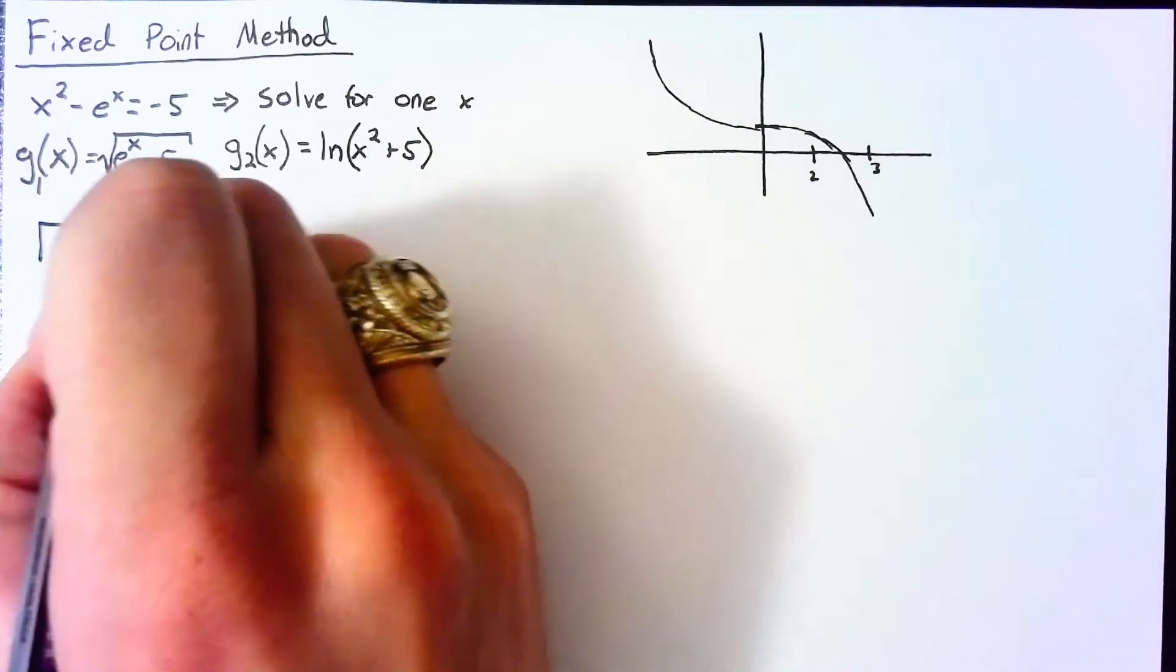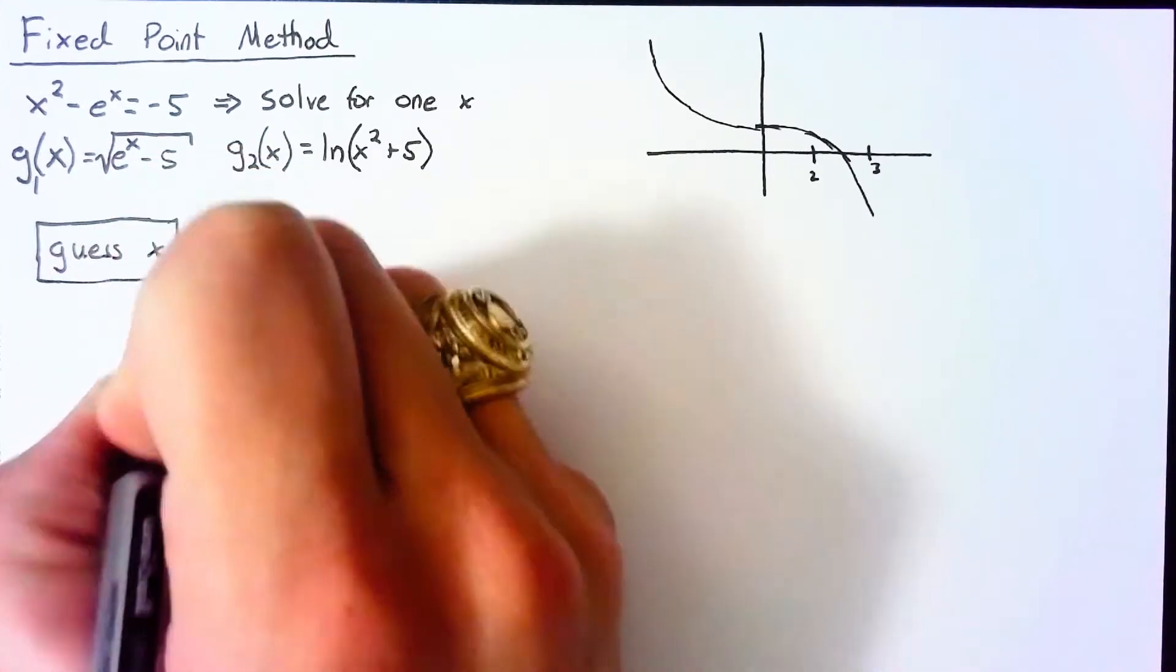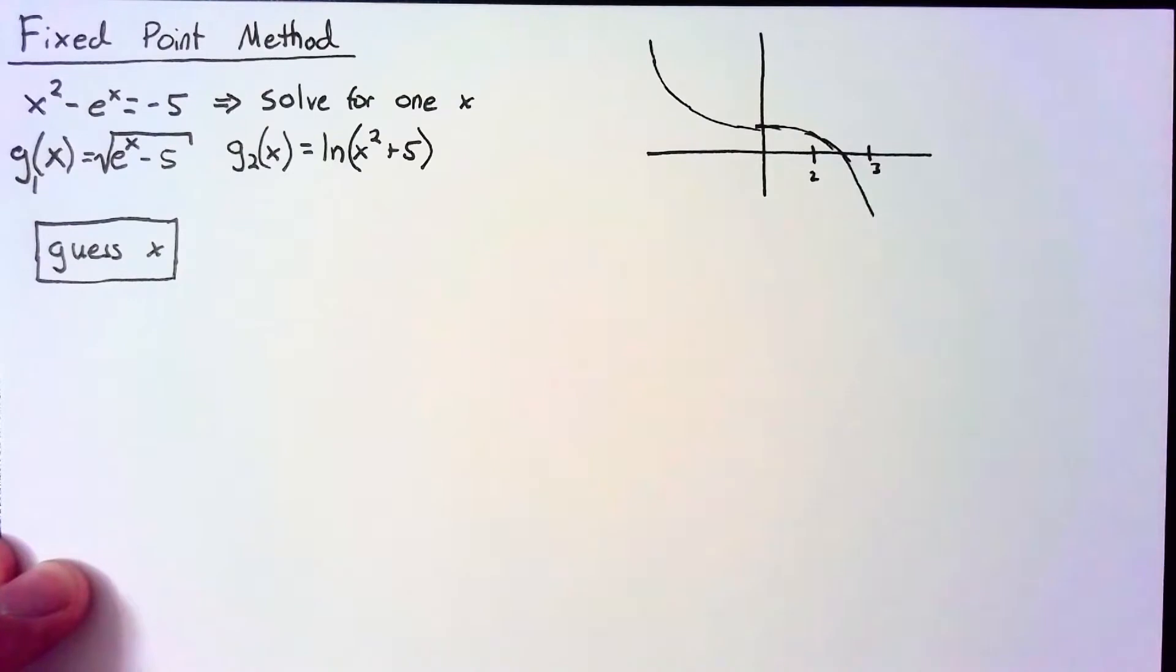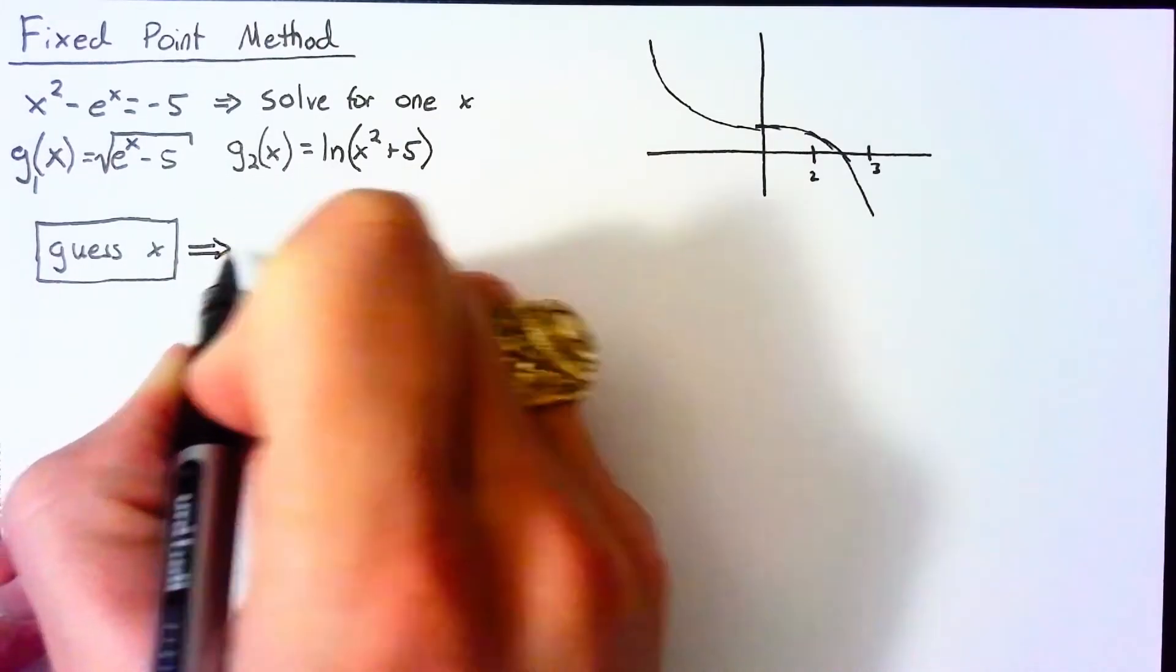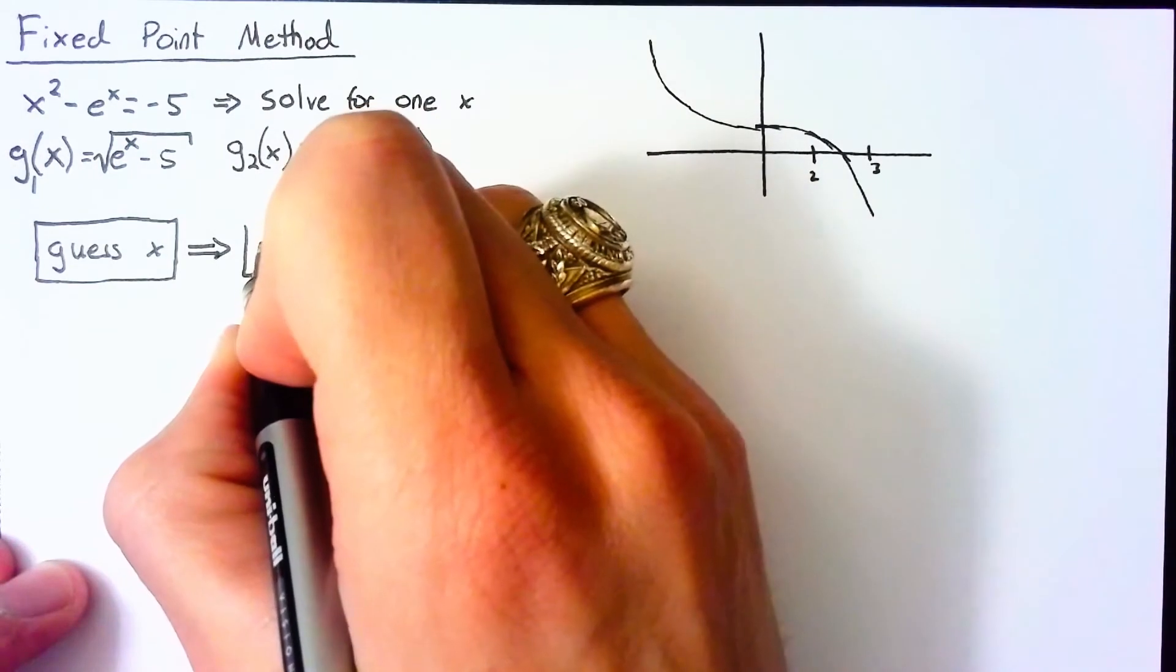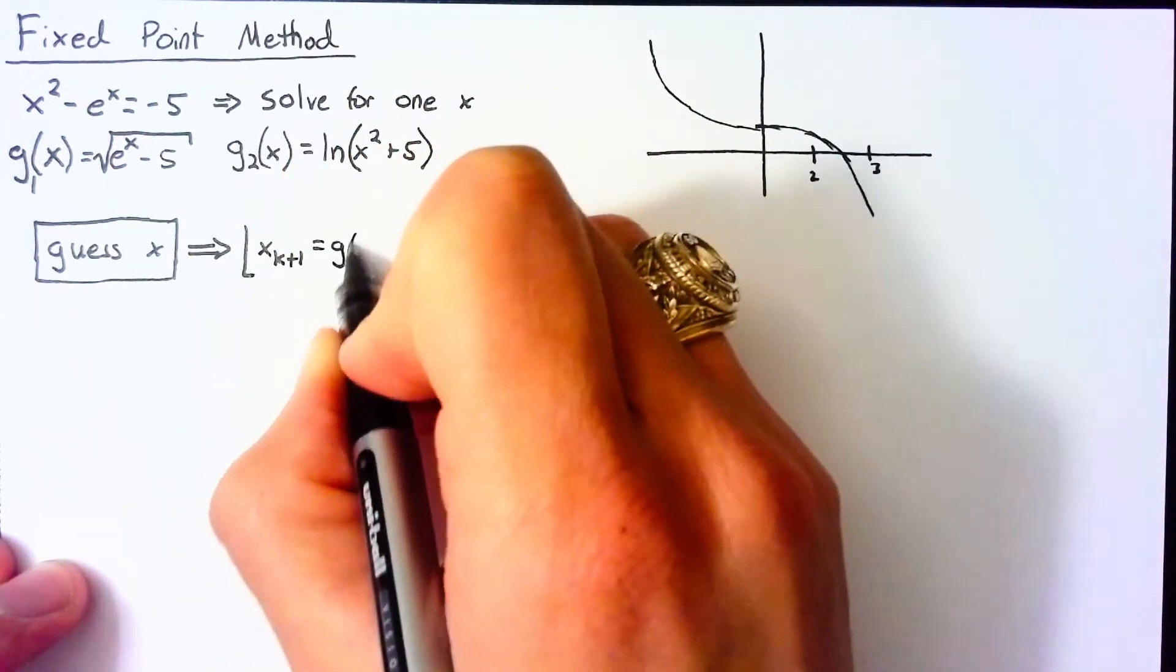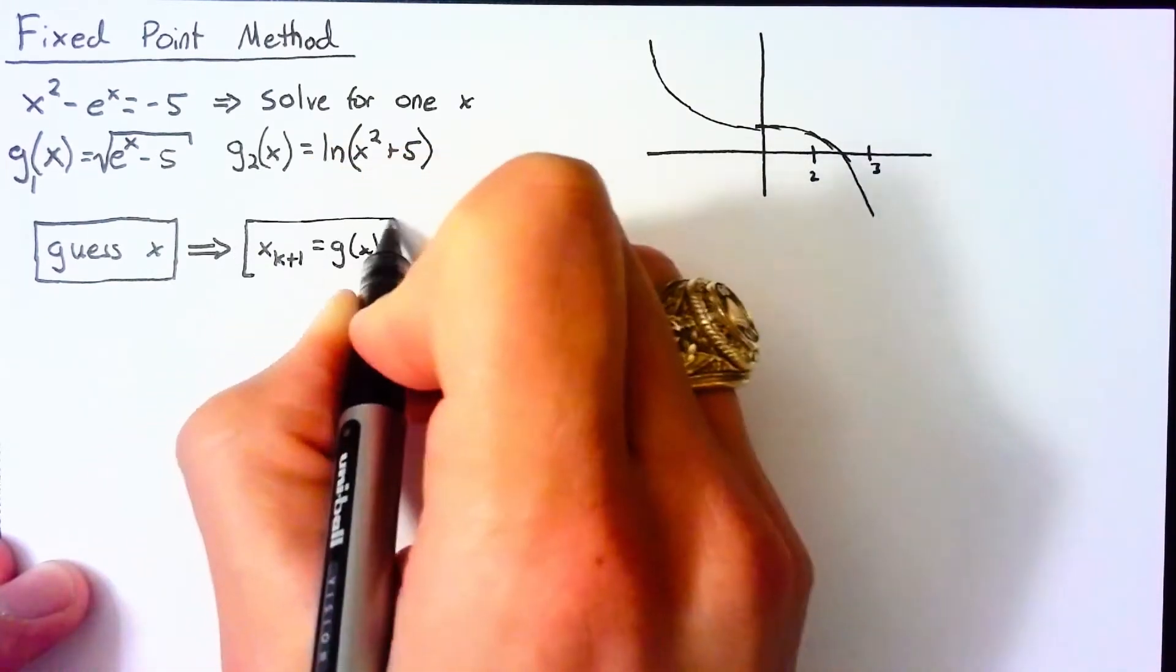So here's the algorithm for this. We start off with a guess for x. Once we have that, we plug that into our g equation. And we just set our x_(k+1) equal to this g(x_k) term.